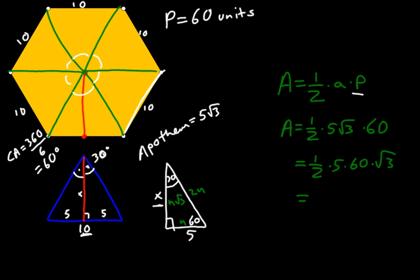And half of 5 times 60 is just 300. No, it's not. Half of 5 times 60, I know 5 times 60 is 300, and half of that should be 150 times root 3 square units.